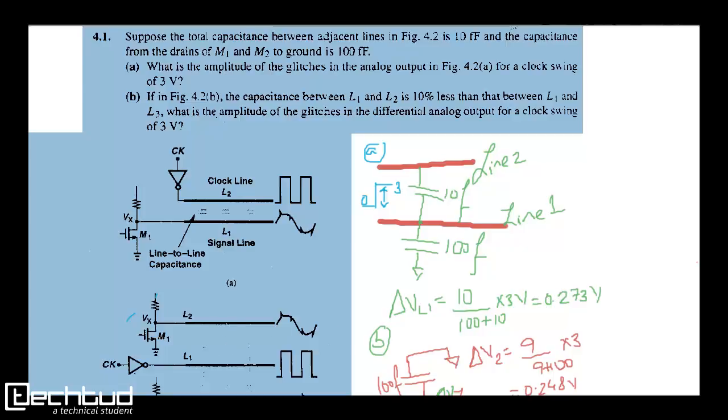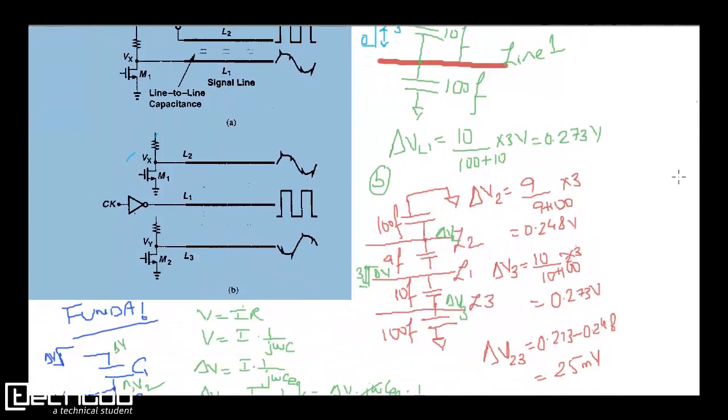Now suppose you have a differential configuration. Now this clock is in between, and this is our line 1 and L2. Now we are seeing the difference V L2 and L3. So what is the amount of glitch we will see now? So first we calculate V L2 here, V L3 here, and take the difference. That is the amount of glitch we will get.